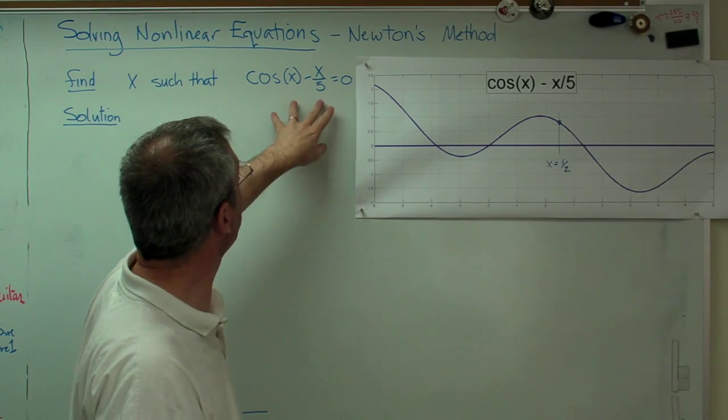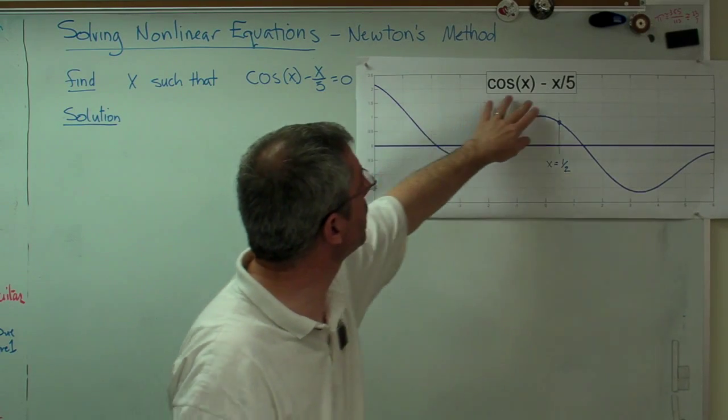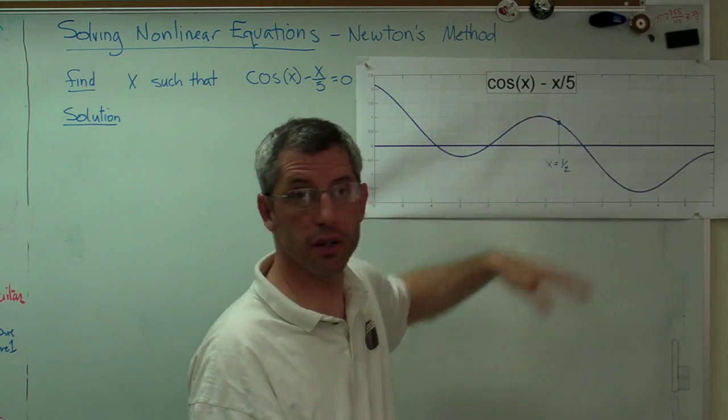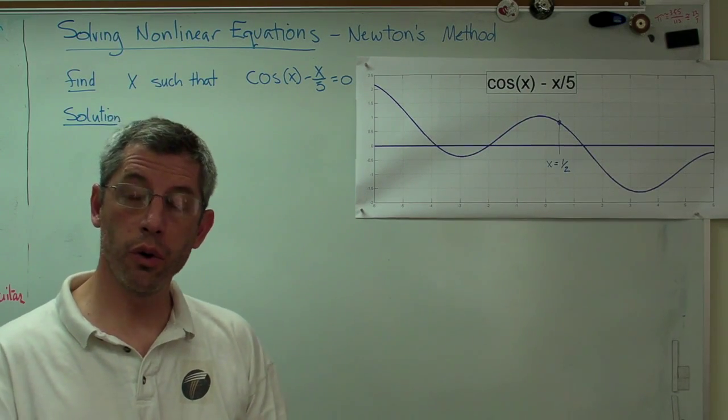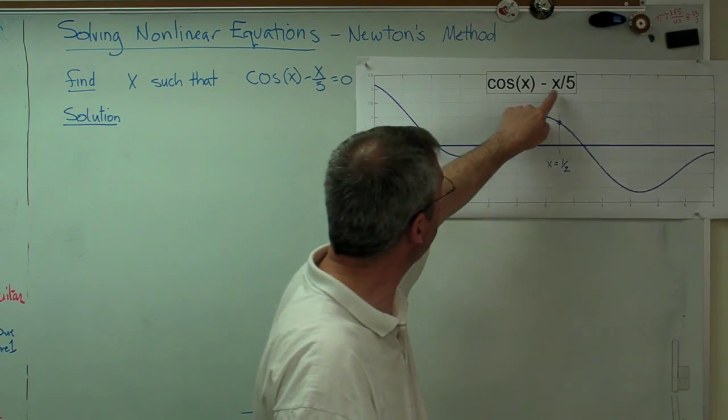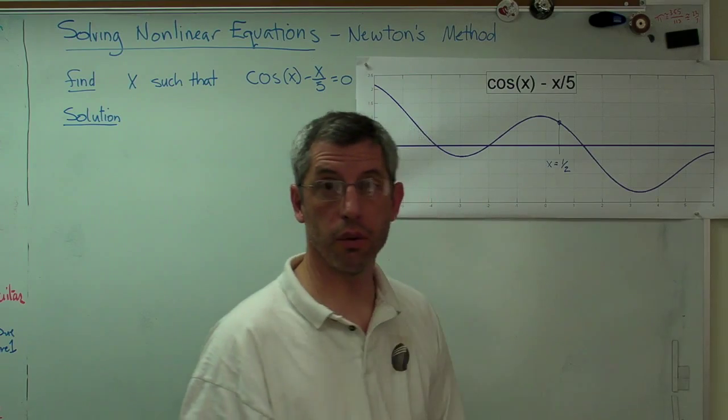Now you might remember from the first part that there's our nonlinear equation. I guess I've got it written up there as well. This is cosine x minus x over 5 and we're trying to find a root of that equation.